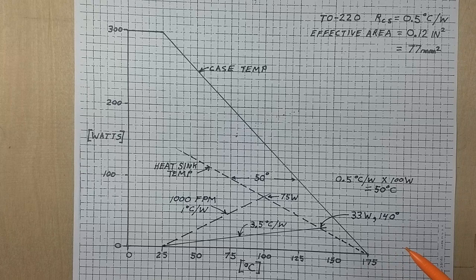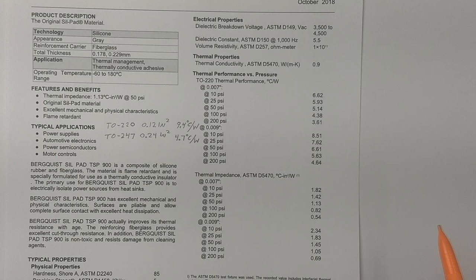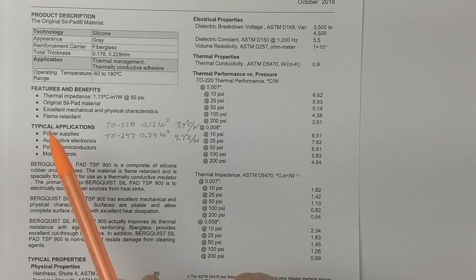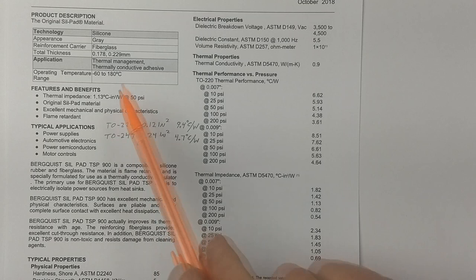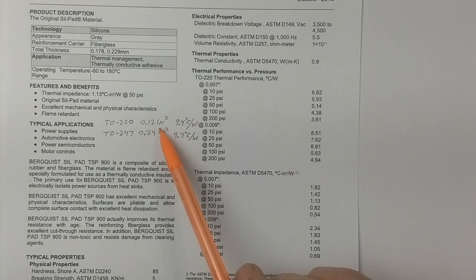If you were to use the complementary pair that I showed you earlier, where the collectors were not at the same voltage potential, you might be tempted to insulate one of the transistors and use the same heat sink for both. And well, here's a typical insulator for that very purpose. And the data sheet says it has a thermal impedance of 1.13 degrees C inch squared per watt.